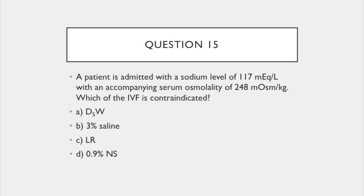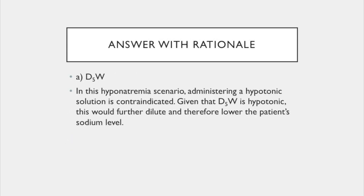Question 15. A patient is admitted with a sodium level of 117 with an accompanying serum osmolality of 248. Which of the following IV fluids is contraindicated? A. D5W. B. 3% saline. C. Lactated Ringer's. Or D. Normal saline. The answer is A: D5W. In this hyponatremia scenario, administering a hypotonic solution is contraindicated. Given that D5W is hypotonic, this would further dilute and therefore lower the patient's sodium level.